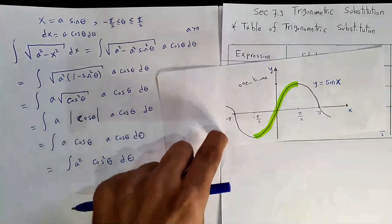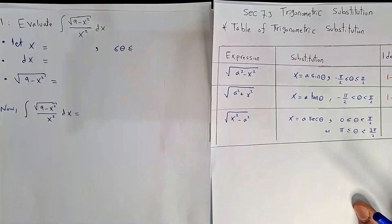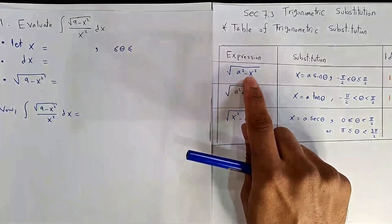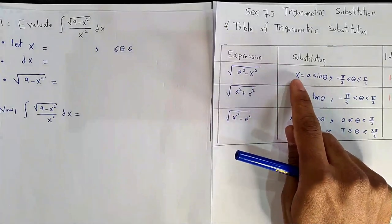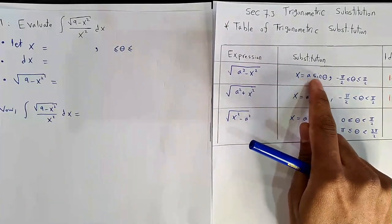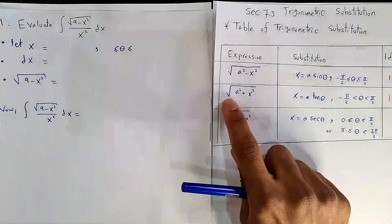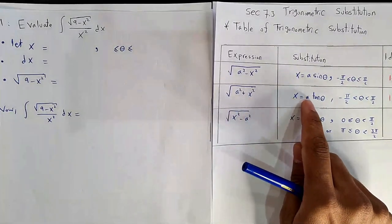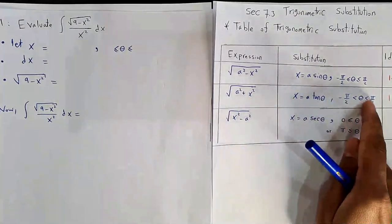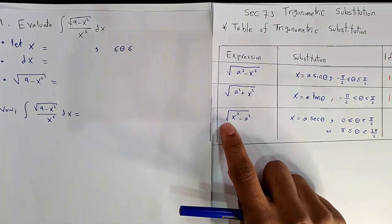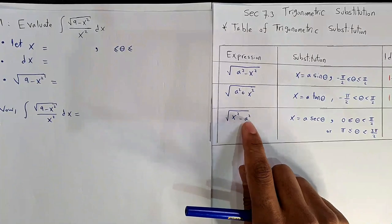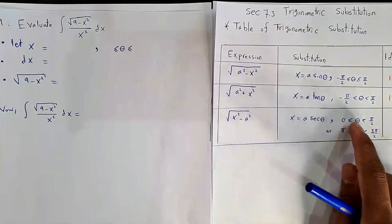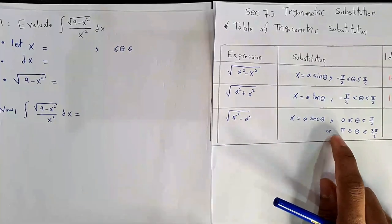In summary: for root(a²-x²), use x = a sin θ on [-π/2, π/2]. For root(a²+x²), use x = a tan θ on (-π/2, π/2). For root(x²-a²), use x = a sec θ on the appropriate interval.